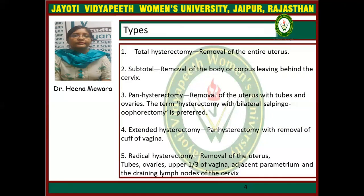There are five types of hysterectomy: total, subtotal, pan, extended, and radical. In total hysterectomy, the entire uterus is removed. When the body or corpus is removed leaving behind the cervix, it is called subtotal hysterectomy. When the uterus is removed with tube and ovary, it is called pan hysterectomy or hysterectomy with bilateral salpingo-oophorectomy.